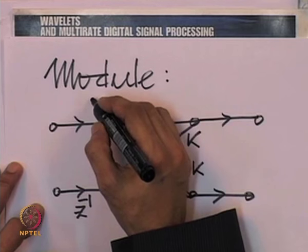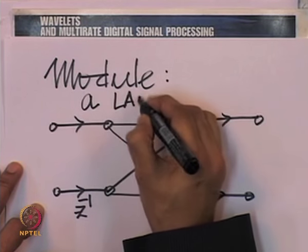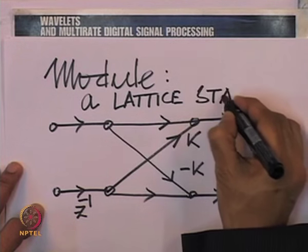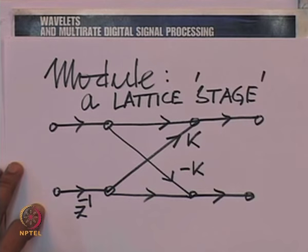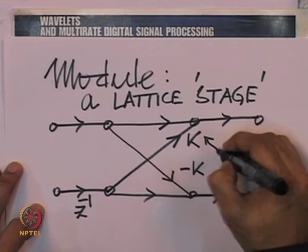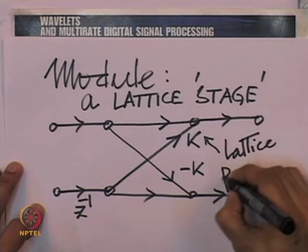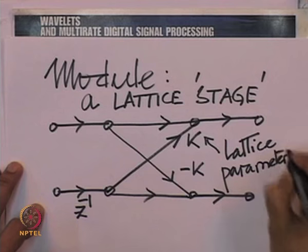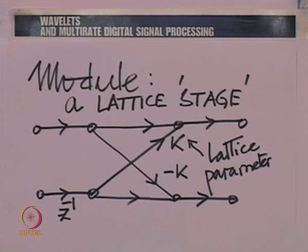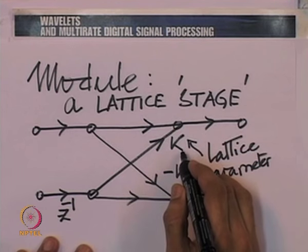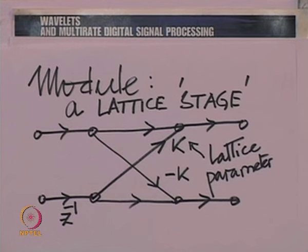This was what we called a one lattice stage, and this was called the lattice parameter — the value of k — which distinguished one stage from another. We also put down a systematic procedure for constructing the lattice. We illustrated the calculations involved in constructing that lattice for a length-4 orthogonal filter, and had left the generalization to longer lengths to you.